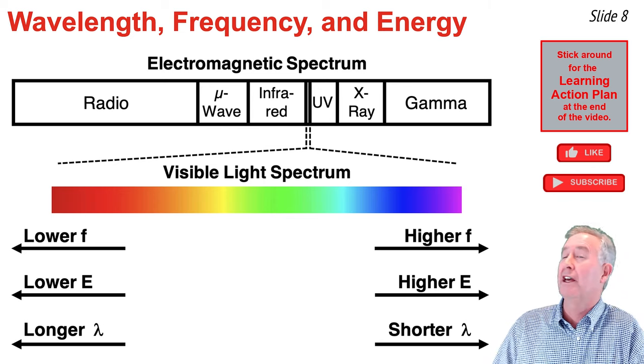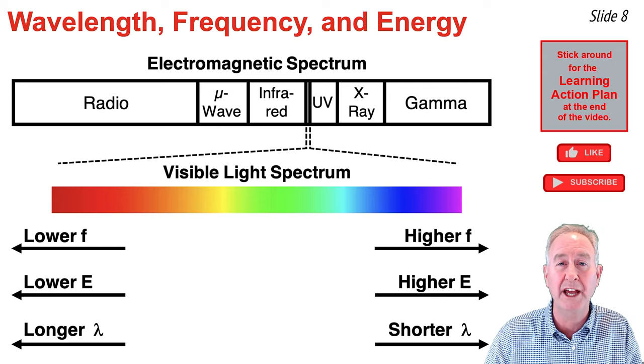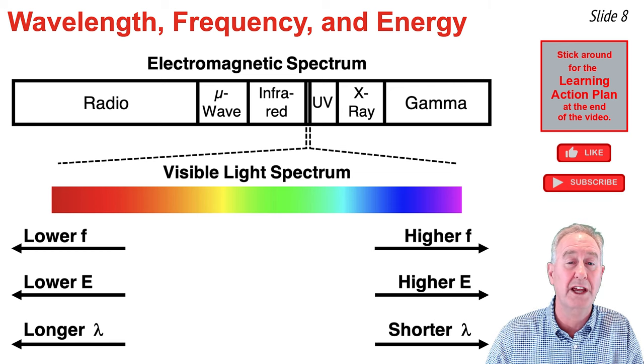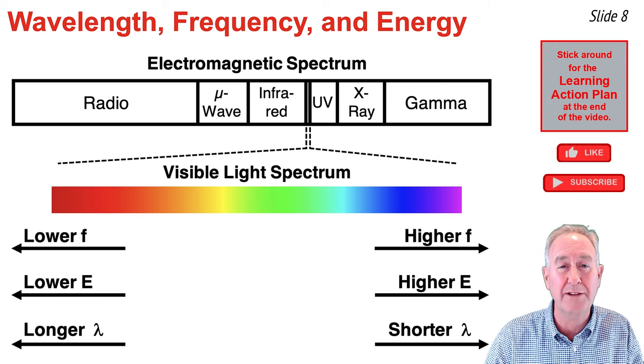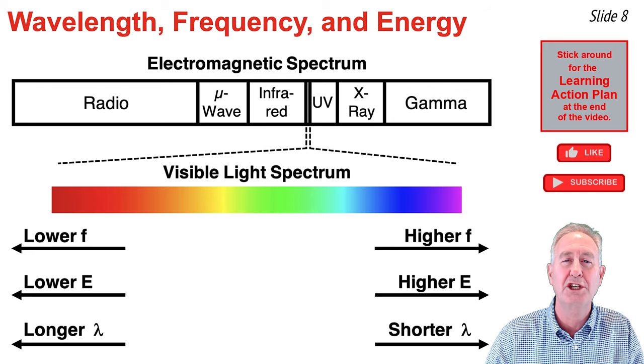Wedged in between the infrared region and the ultraviolet region is the visible light region. The visible light region is a range of wavelengths and colors.